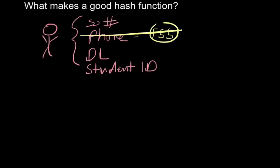Driver's license seems like it'd be a good one, except for the fact that you're dealing with students from different states and different parts of the world. You have students that are not even going to have a driver's license. So if you even have a single student who does not have it, then it's not going to work as a hash function because every element has to have this ID.